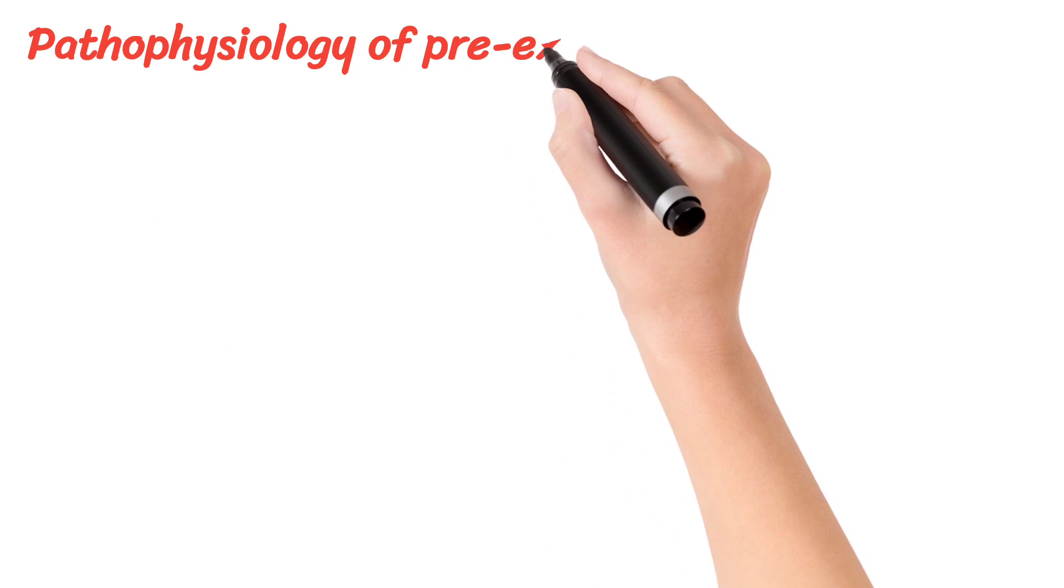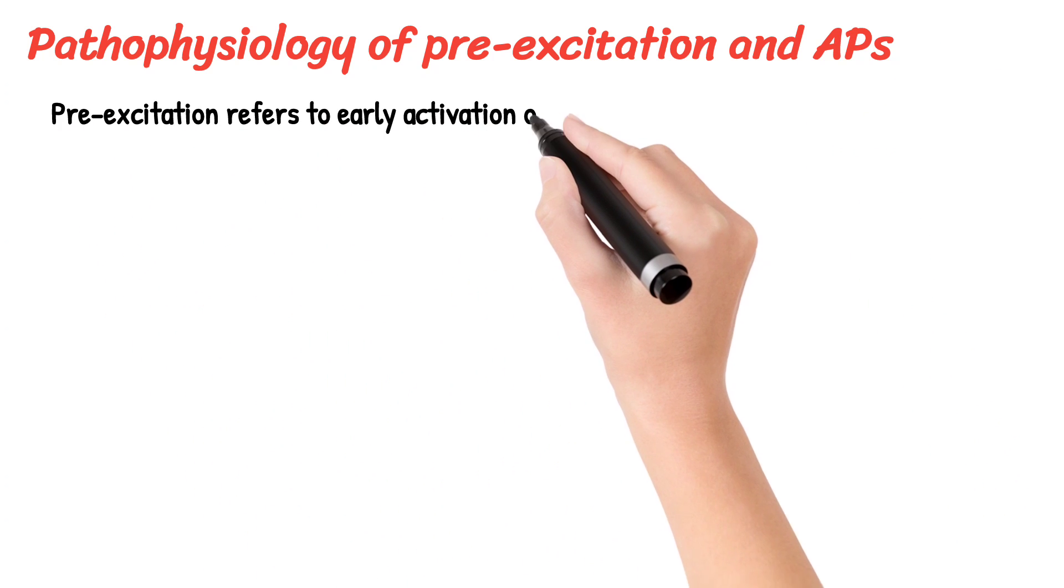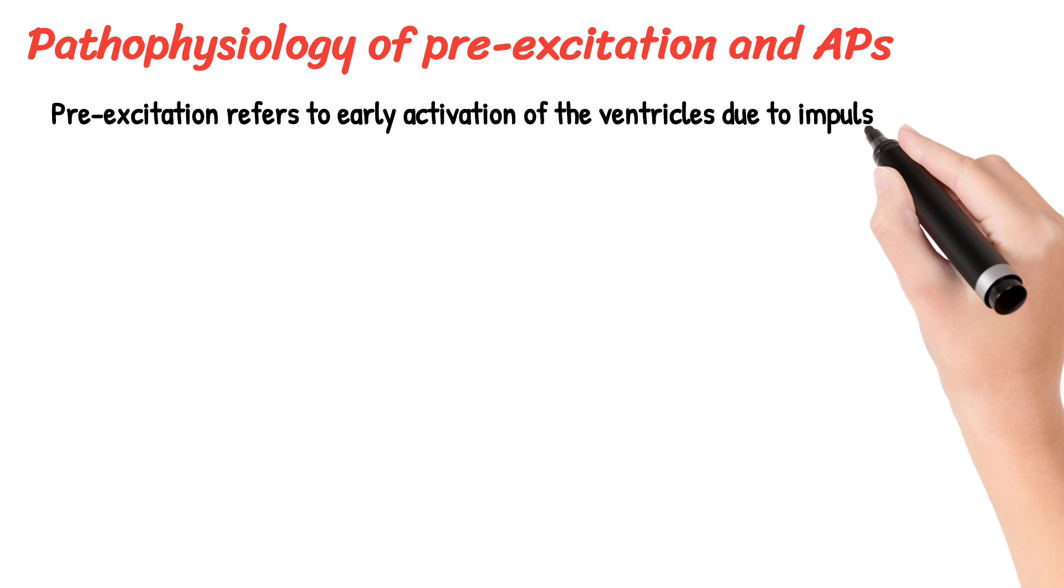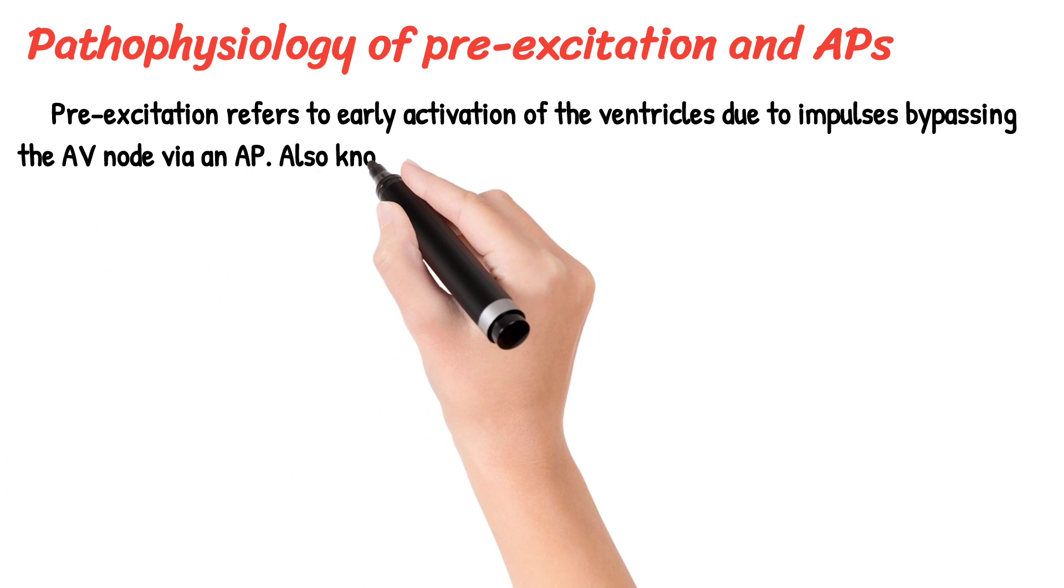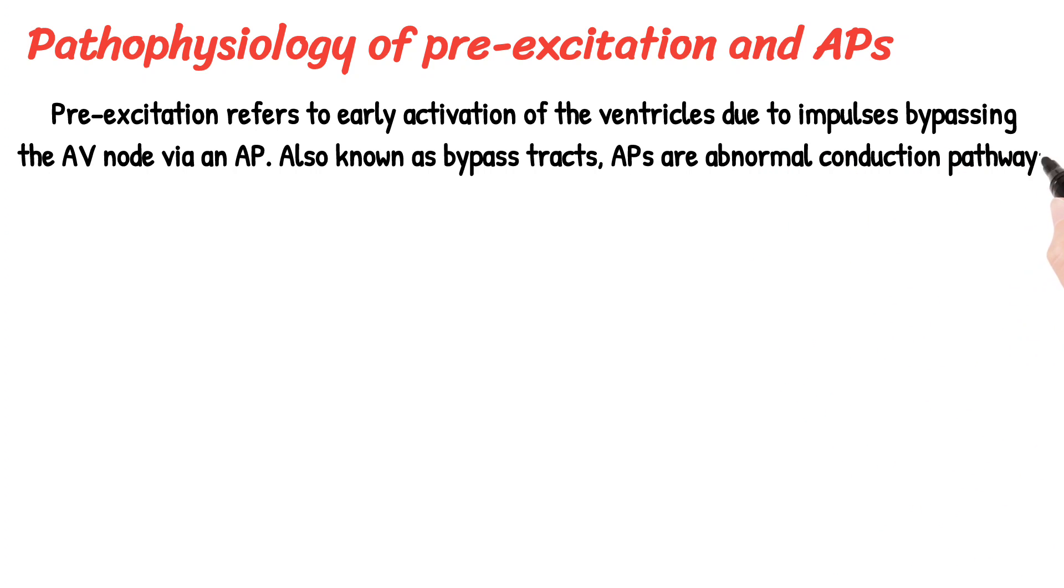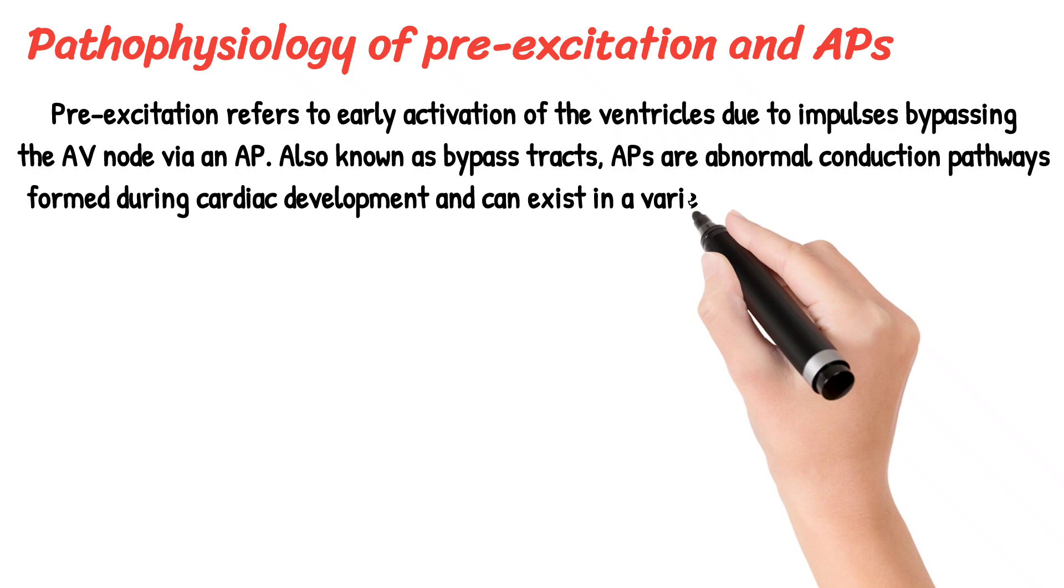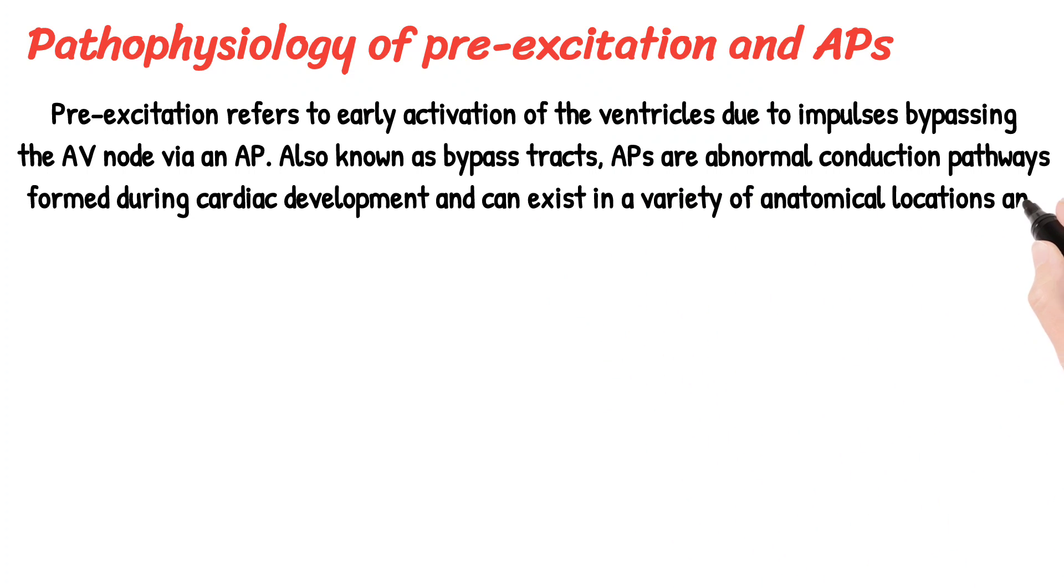Pathophysiology of pre-excitation and APs. Pre-excitation refers to early activation of the ventricles due to impulses bypassing the AV node via an AP. Also known as bypass tracts, APs are abnormal conduction pathways formed during cardiac development and can exist in a variety of anatomical locations. In some patients there may be multiple pathways.